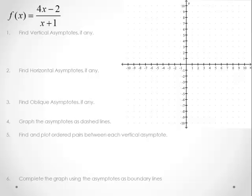We're going to graph the rational function f(x) = (4x - 2)/(x + 1). For vertical asymptotes, we look at the denominator and see when it equals 0. So here we end up with a vertical asymptote at x = -1.